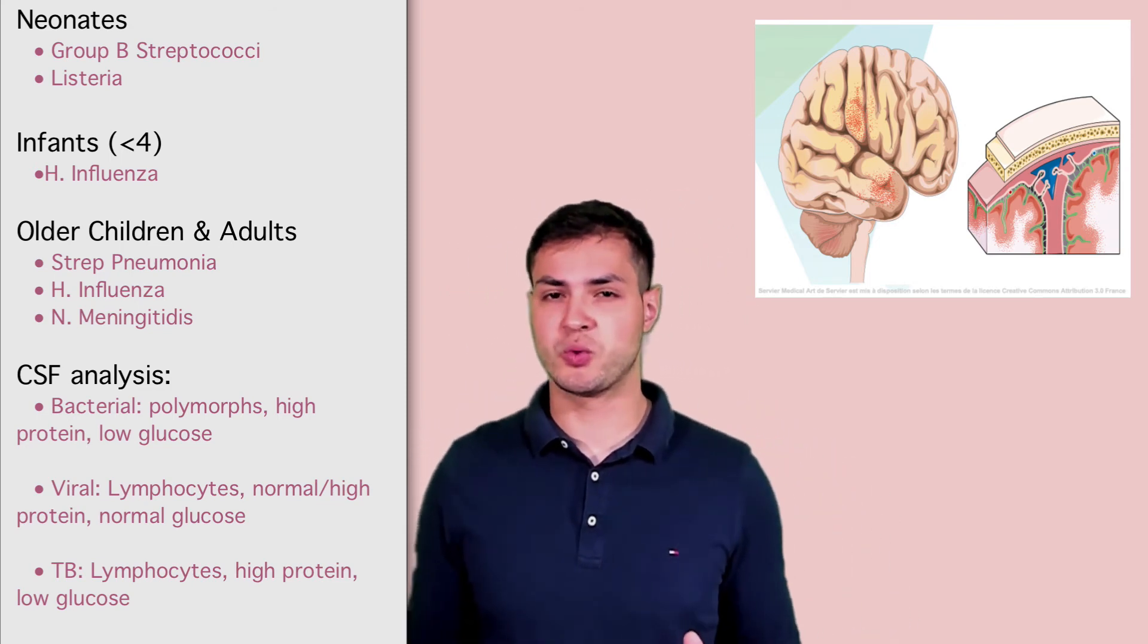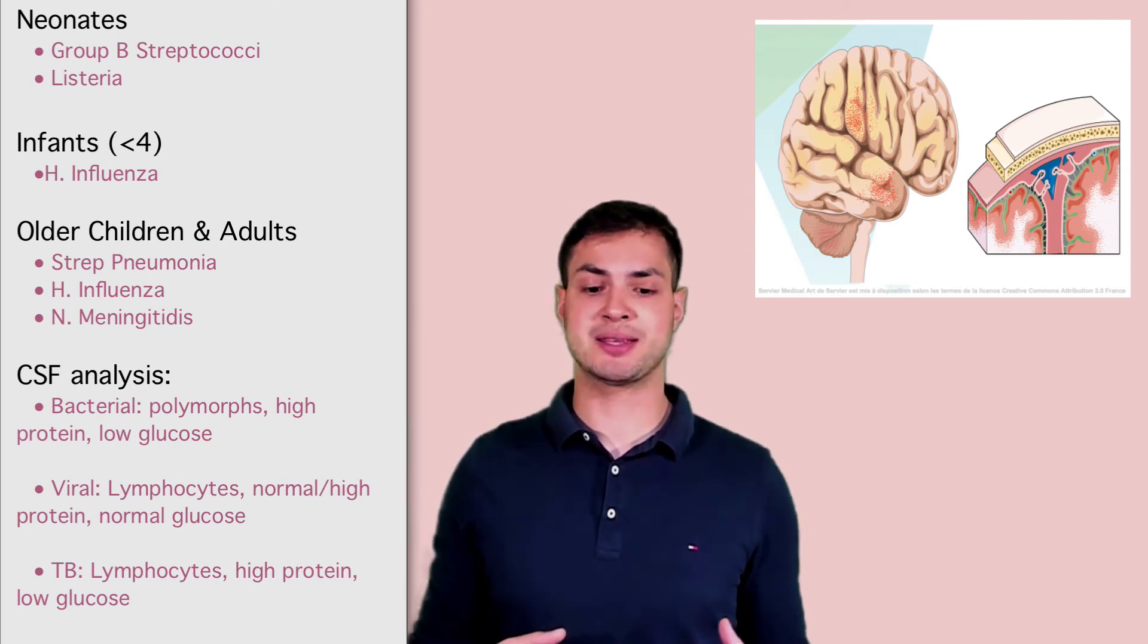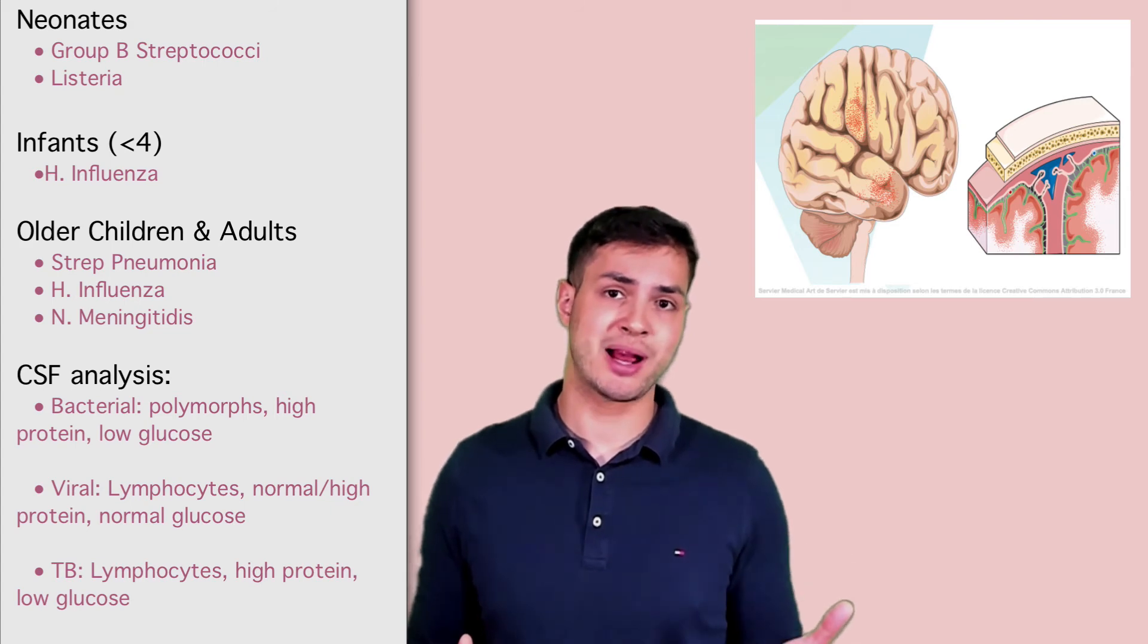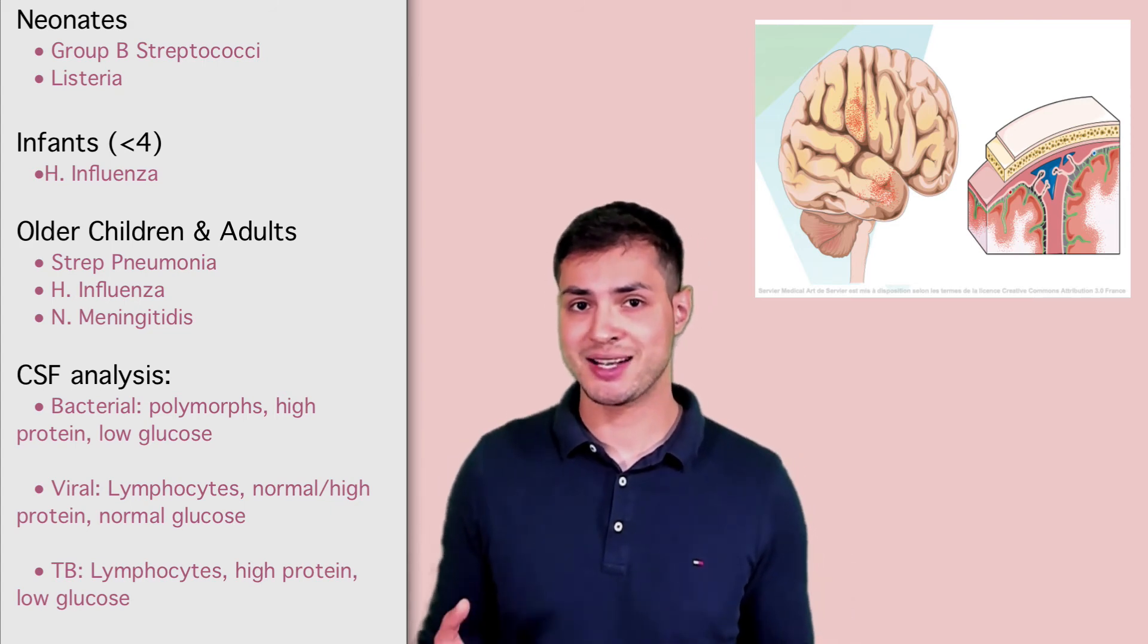Also the other thing I'll mention, which is in a different video which I'll link up here, is how does meningitis present? Well it presents with a headache, a fever, and usually a rash. A typical sign you find is a sign of meningism which is basically neck stiffness. So whenever you get neck stiffness, you know that there's some sort of meningism happening.